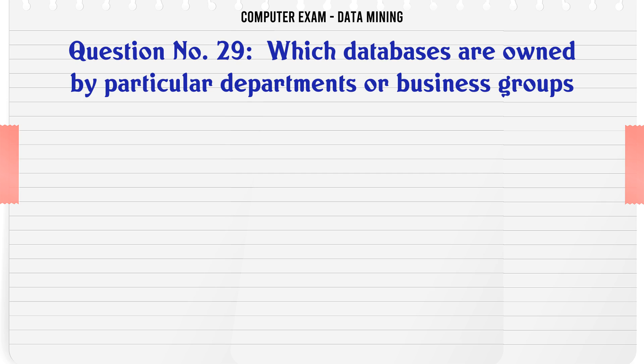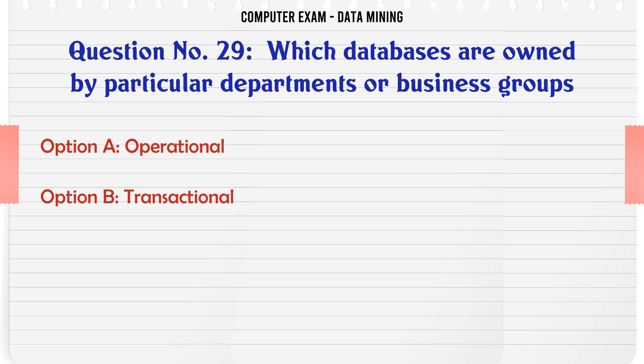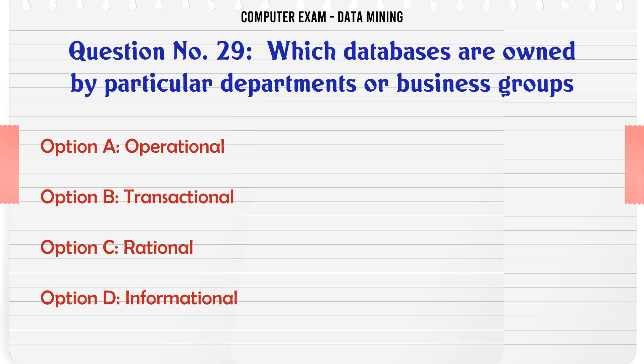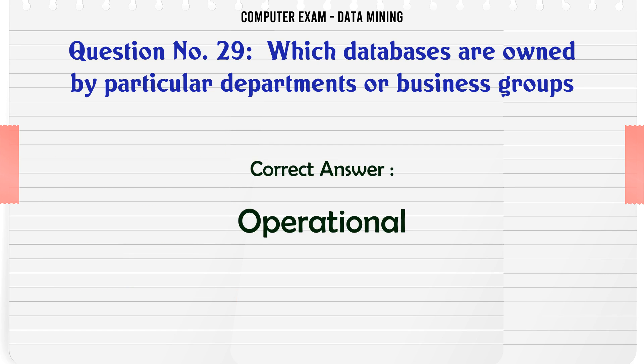Which databases are owned by particular departments or business groups? A. Operational. B. Transactional. C. Rational. D. Informational. The correct answer is Operational.